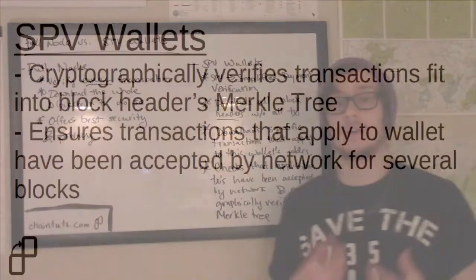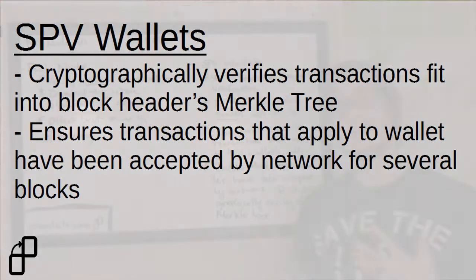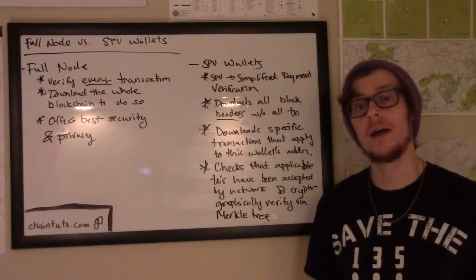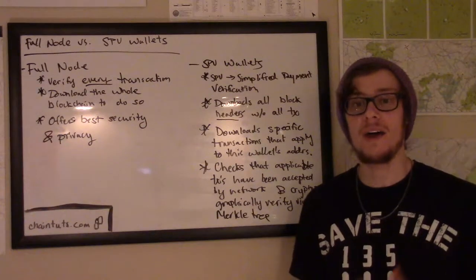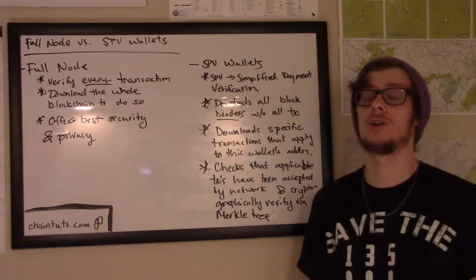They do have to download some of the specific transaction data, and in order to cryptographically verify this and avoid trusting other nodes too much, they can check that the transactions are included in the Merkle tree that is part of the block headers. So it's a way of cryptographically verifying that a transaction has been included in a block and accepted by the network, without having to look at every single transaction all the way back in the blockchain.